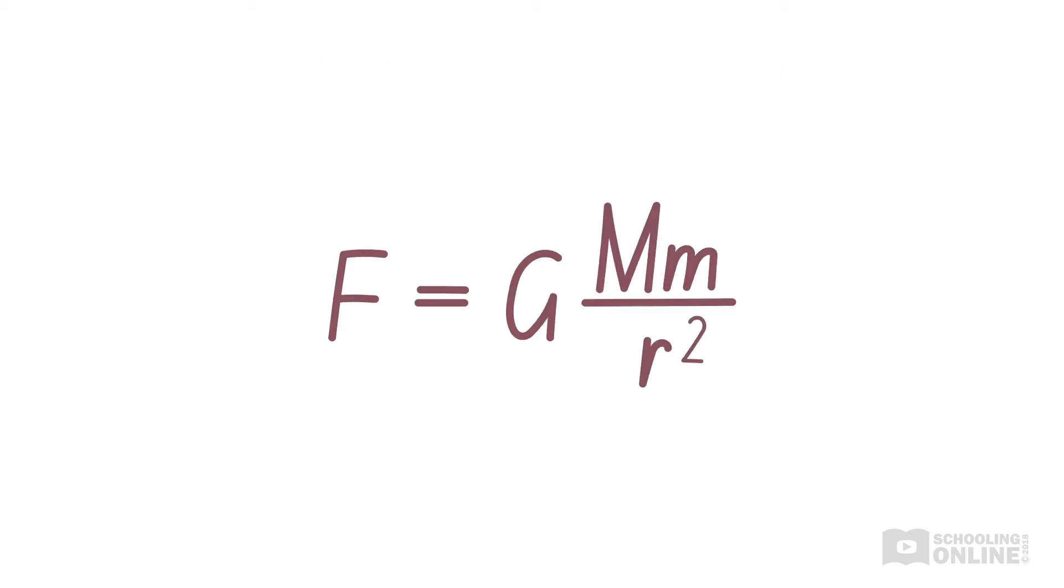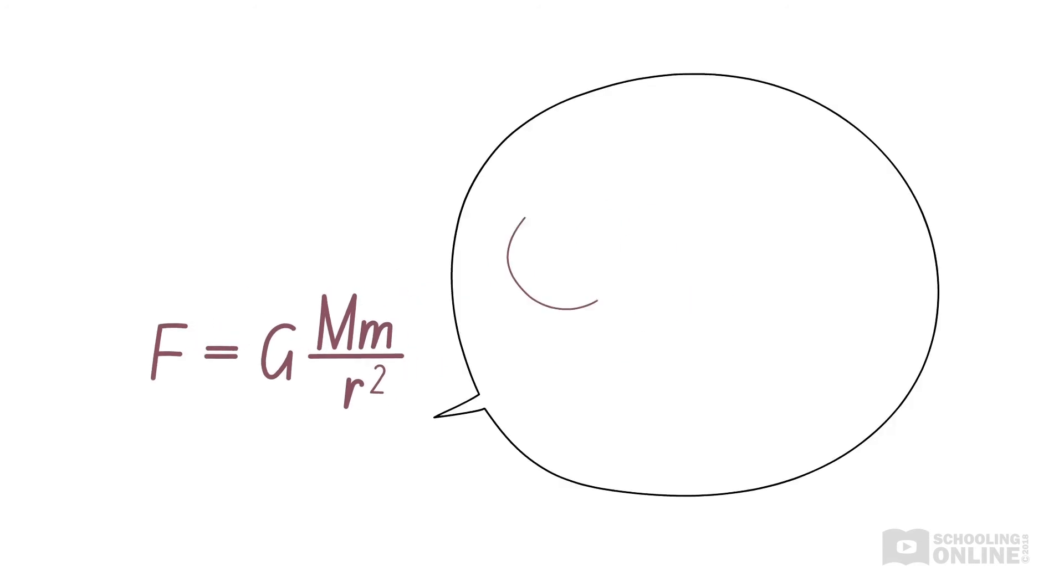We can calculate the gravitational force between two objects by using Newton's law of gravitation. Where F is the gravitational force in Newtons.